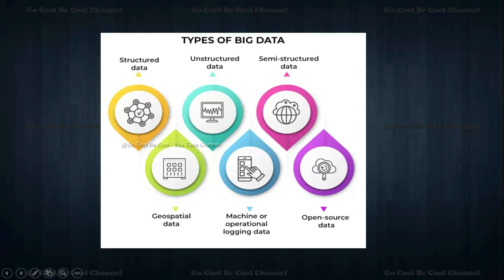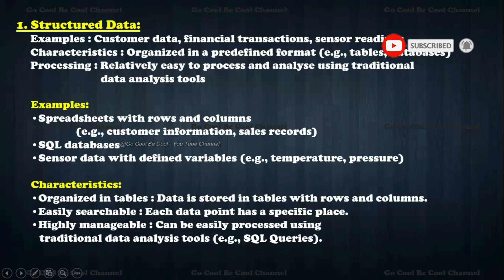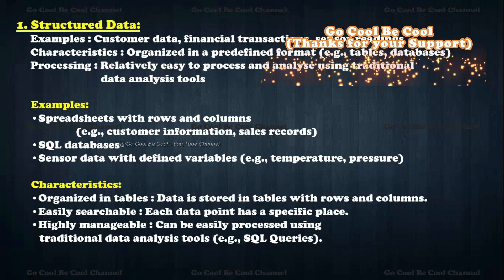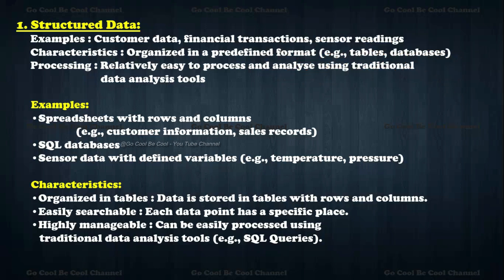We have another three types of big data as well: geospatial data, machine or operational logging data, and open source data. Looking at structured data more closely — in most analytics work like database management, data engineering, analytics science, and specialist roles — structured data is majorly handled. Examples include customer data, financial transactions, and sensor readings. It is mainly organized in a predefined format such as tables and databases.